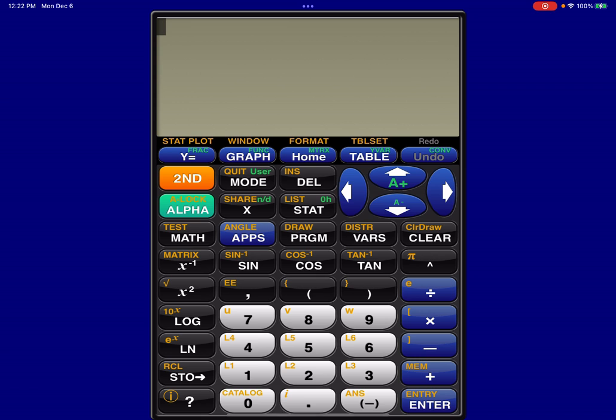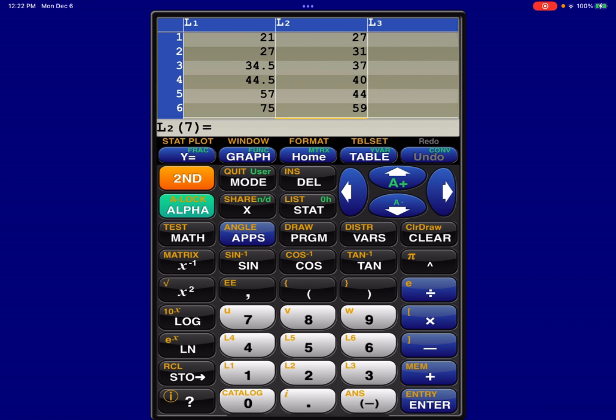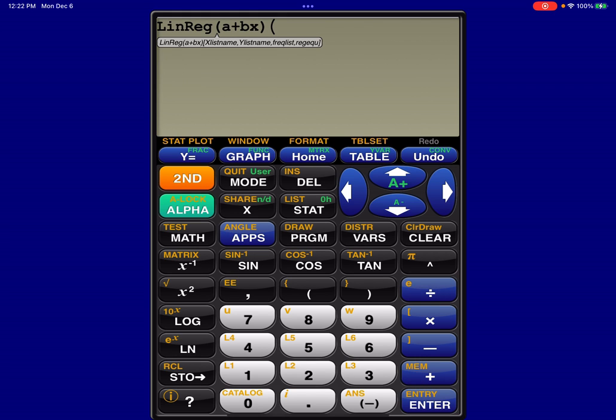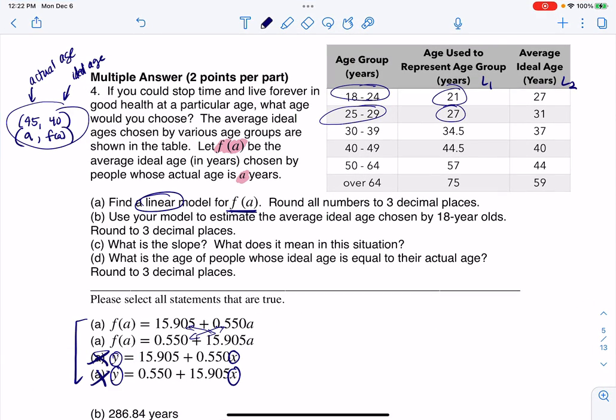I put these data values, let me clear this out, I put them already into my calculator. So I'm going to go ahead and run linear regression. So let's do stat calc. Now on the physical calculator it's 8, on this app it's 9, so I'm going to do L1, L2, and then let's drop it into Y1. And I will overwrite whatever was there, and I can see my Y-intercept at 15.905, and my slope at 0.550, so let me go write that over here, so my A value was 15.905, and my B value was 0.550.